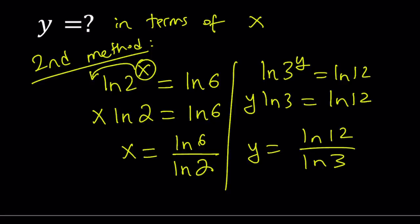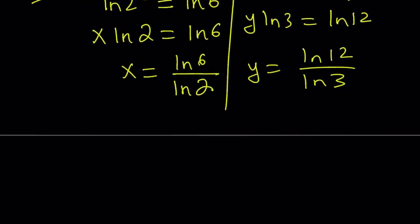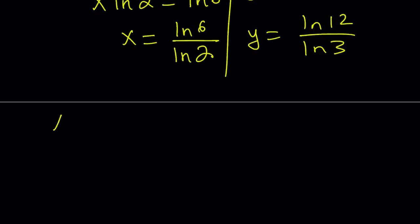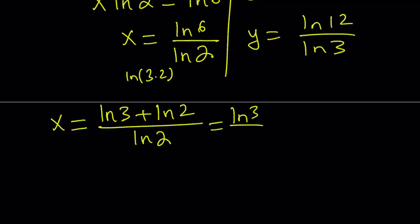Okay, great. Let's go ahead and simplify this expression. First of all, I'm going to start with x and write the ln 6 as ln 3 times 2. So remember, log of a product is the sum of log. So we can write this as ln 6 can be written as ln 3 plus ln 2 divided by ln 2. And now we can kind of separate this a little bit and write it as ln 3 over ln 2 plus ln 2 over ln 2,